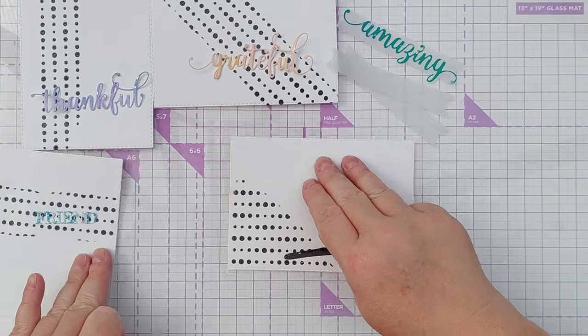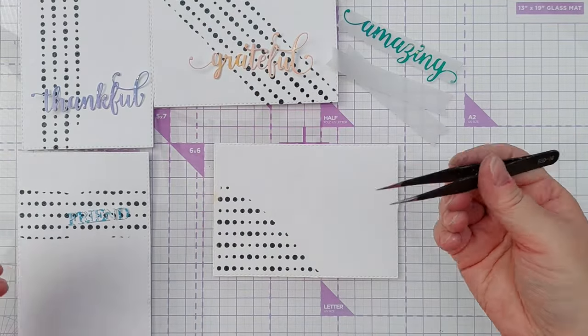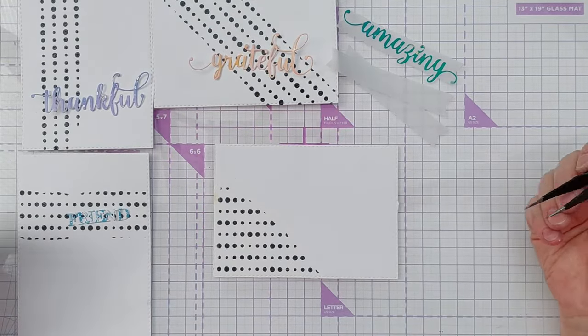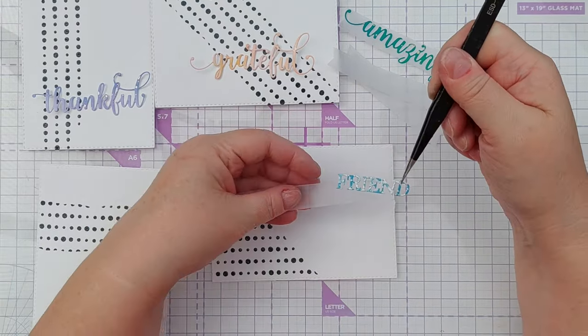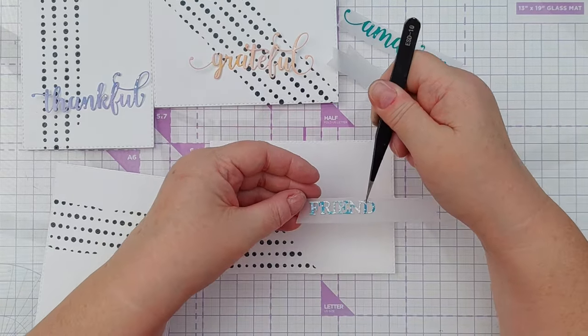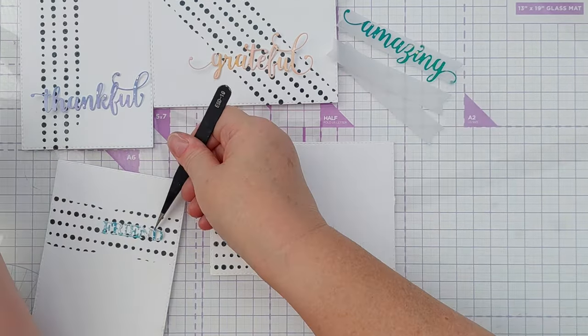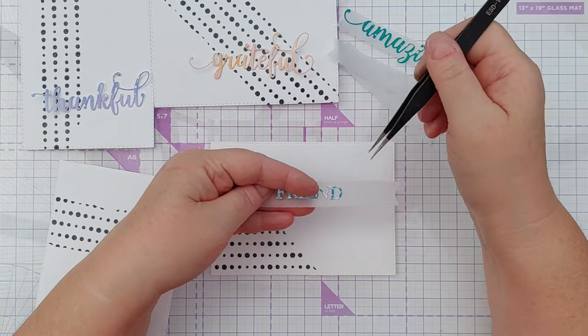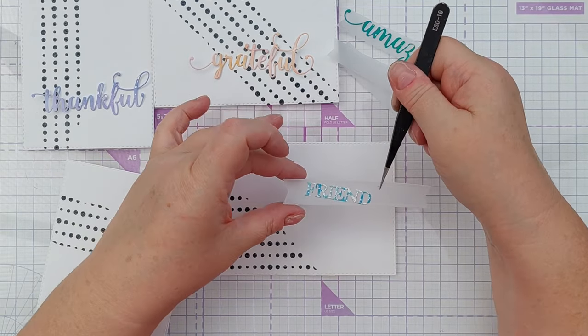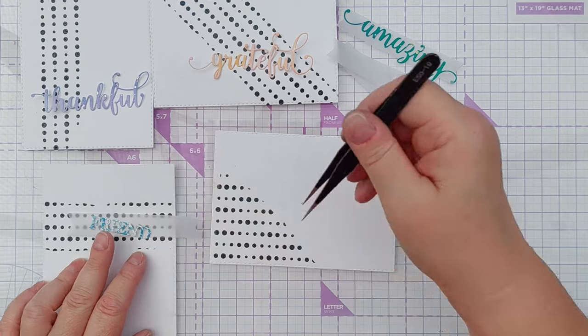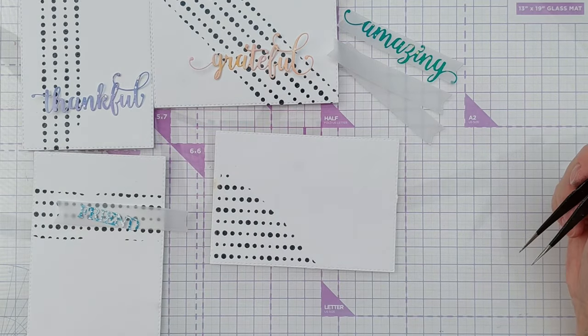So I've cut my sentiments out. They need a bit of something extra to help them stand out, especially this friend one. I think I might have to add some more colour to it because it's not really standing out on there. I've also cut some stitched fishtail banners that I'm going to use on top of the spotty bit as well.